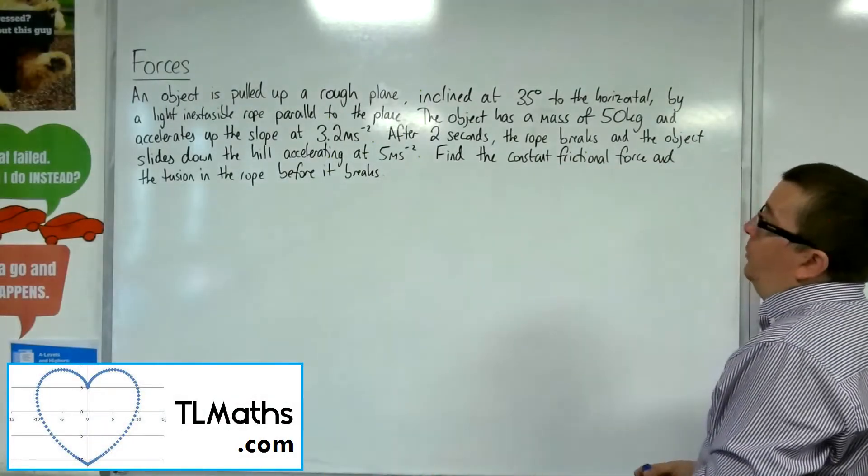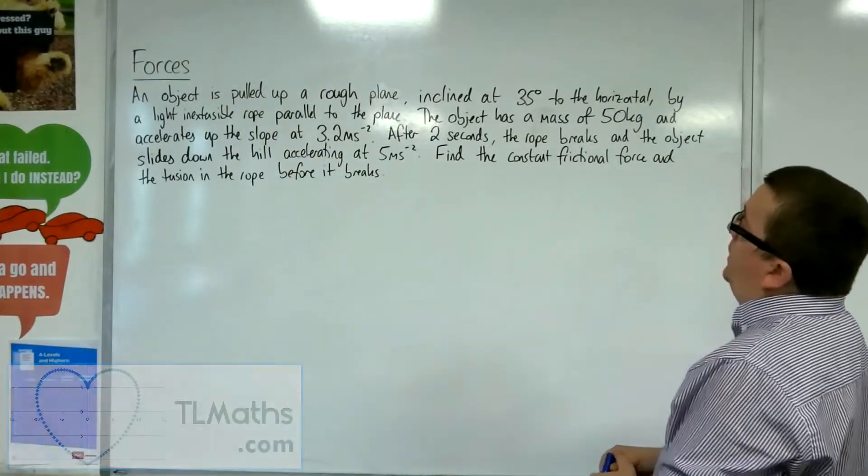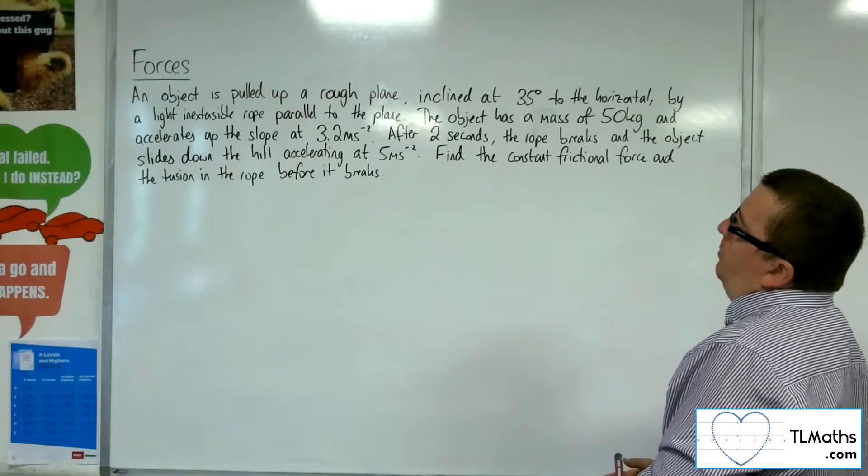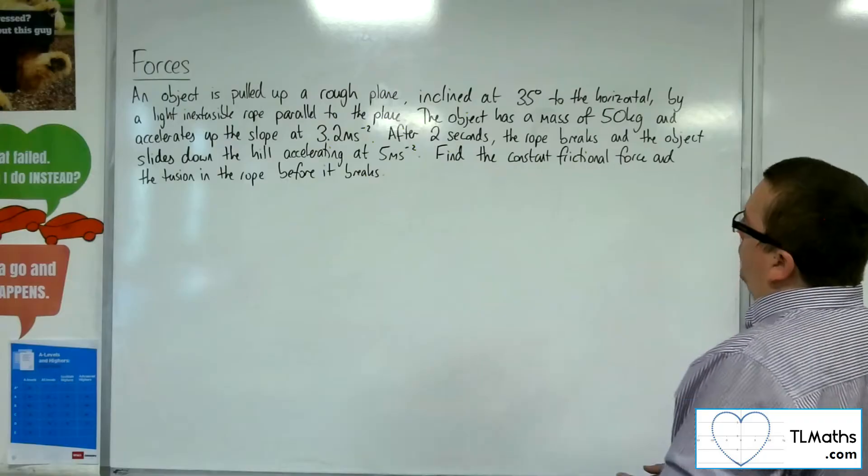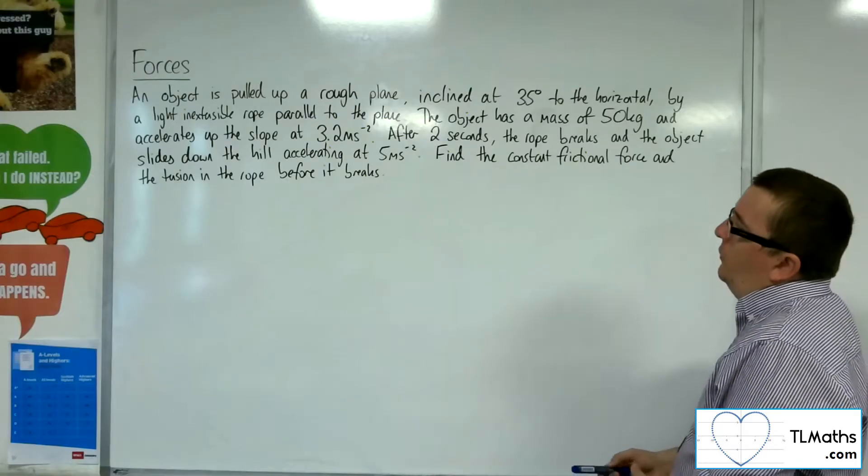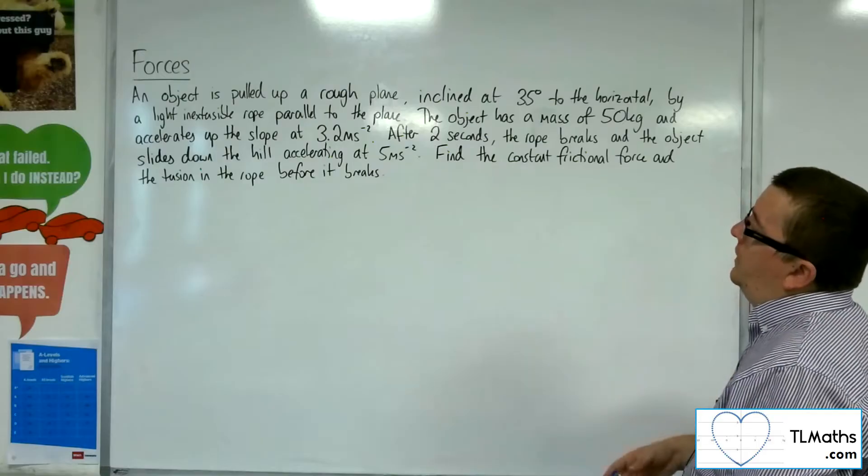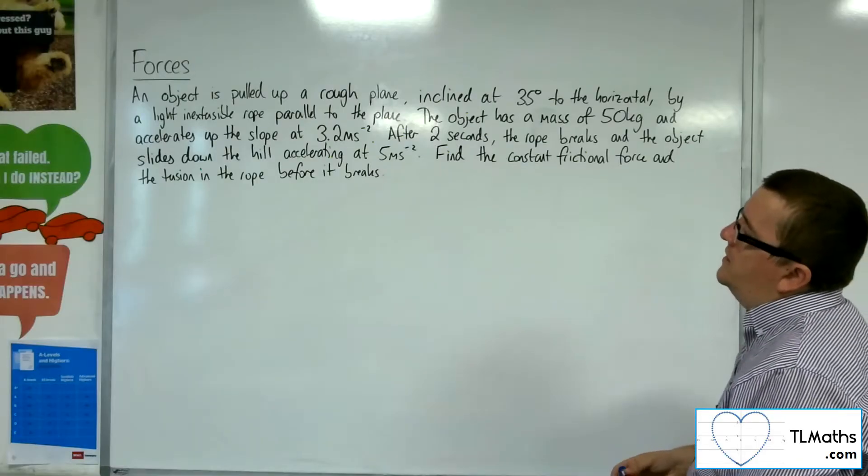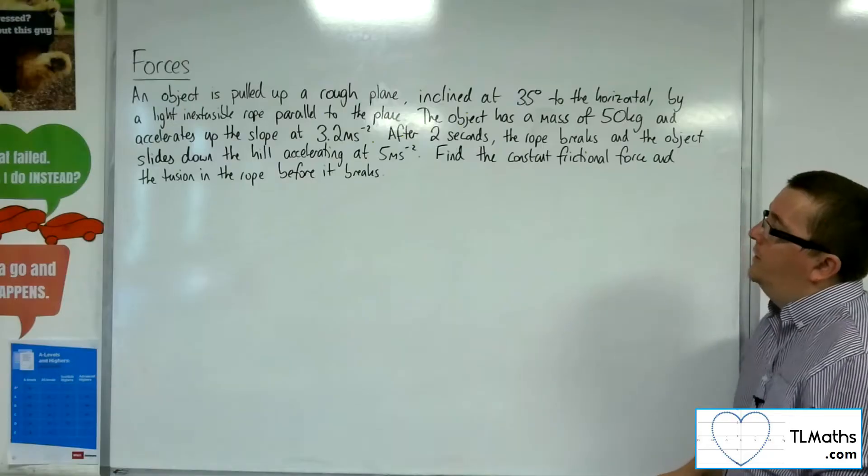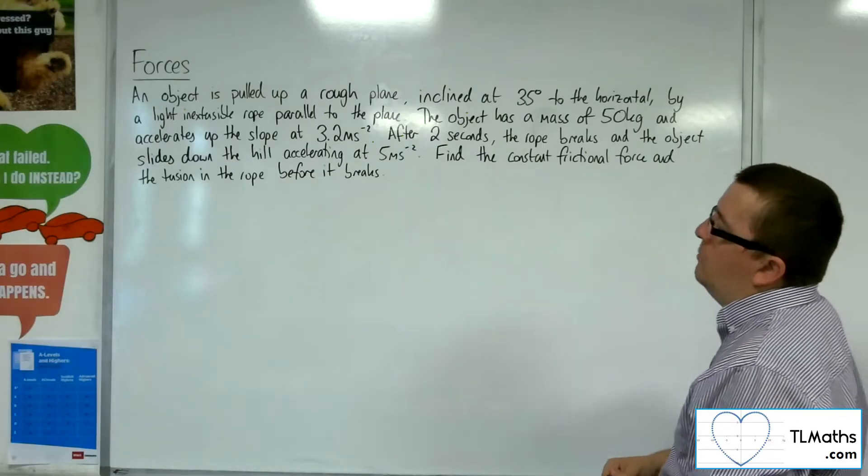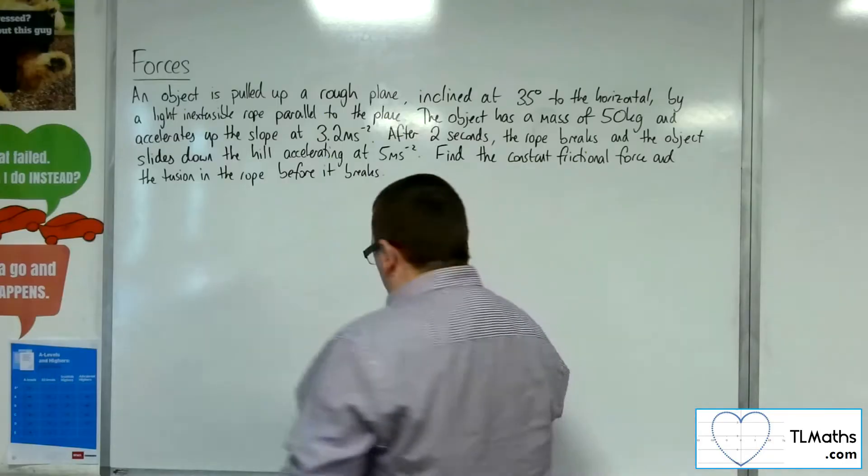In this problem, an object is pulled up a rough plane inclined at 35 degrees to the horizontal by a light inextensible rope parallel to the plane. The object has a mass of 50 kilos and accelerates up the slope at 3.2 metres per second per second. After 2 seconds, the rope breaks and the object slides down the hill accelerating at 5 metres per second per second. Find the constant frictional force and the tension in the rope before it breaks.